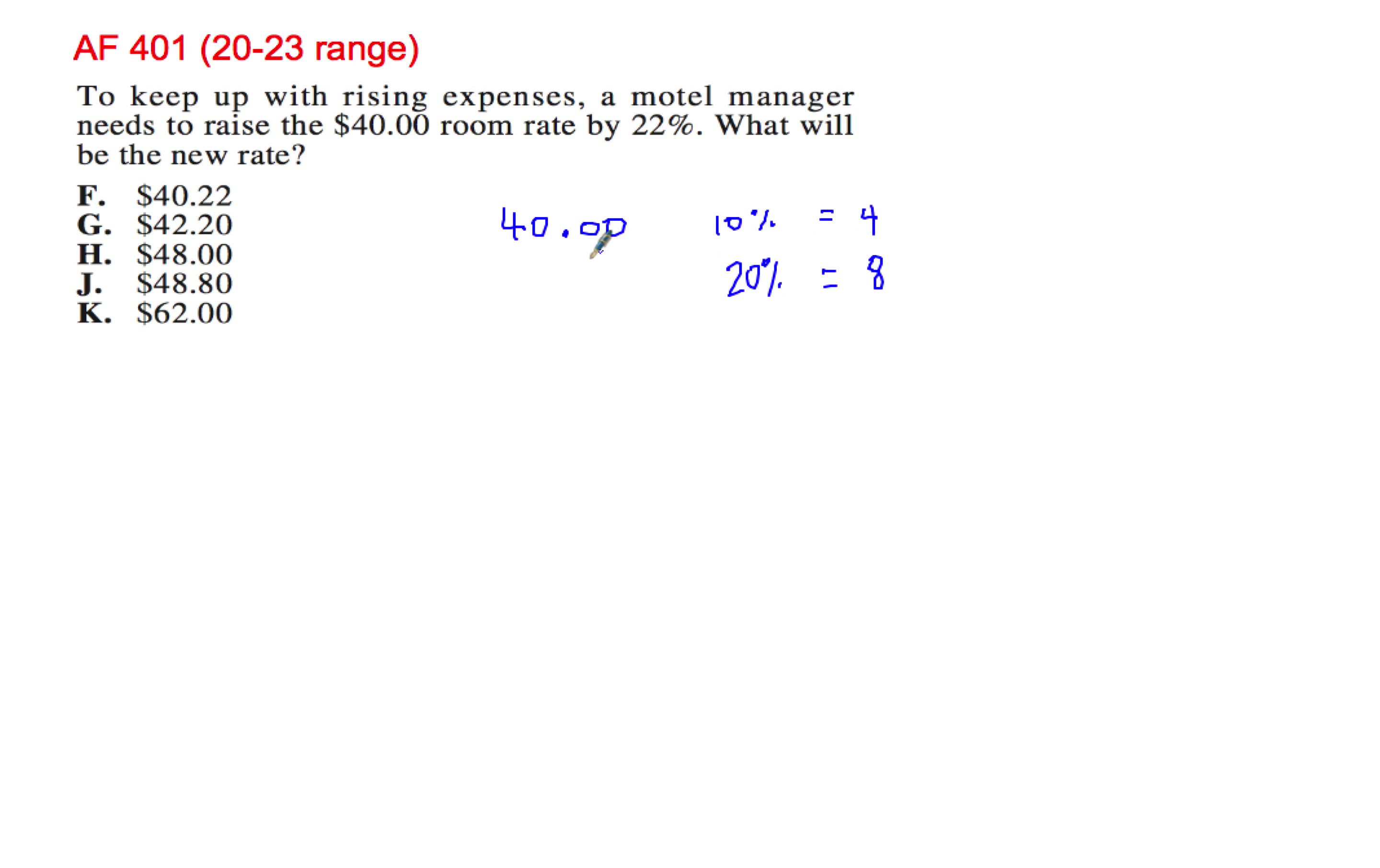That means a room that costs 20% more than 40 is going to be about $48 or it's going to be $48 exactly. But it's not asking for 20%, it's asking for 22%, which is just a little over 20%.